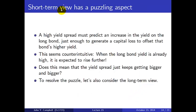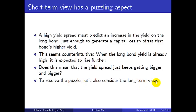There's one puzzling aspect of the short-term view. We said a high yield spread must predict an increase in the long bond yield — just enough to give a capital loss offsetting that bond's higher yield. But this seems counterintuitive: when the long bond yield is already high, it's expected to rise even further. You might think the yield spread would just keep getting bigger. To resolve that puzzle, let's also consider the long-term view.